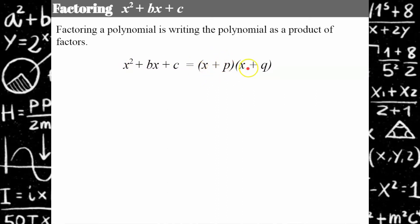It's going to look like this: a binomial times a binomial. We're going to use the algebraic variables p and q. What we need to do is find out what p and q are such that when I add p plus q I'm going to get the value of b, and when I multiply p times q it's going to equal c.